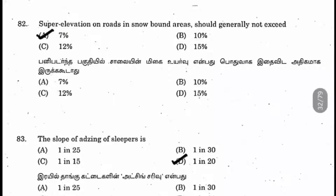Question 83: The slope of adzing of sleepers is what? Adzing is related to the super elevation provided in roads, but here it is applied to sleepers. It helps trains on curves — the sleepers are raised on the outer edge. That slope is called adzing and it is 1 in 20. The lower part is on the inner side and the outer edge is raised, same as super elevation on roads.